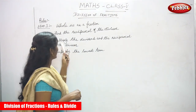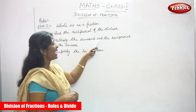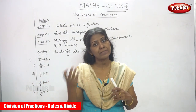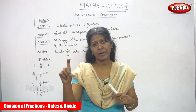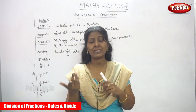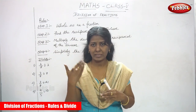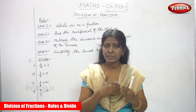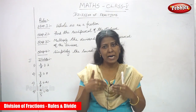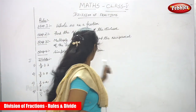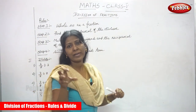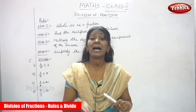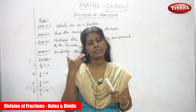Step three: multiply the dividend and the reciprocal of the divisor. First find the divisor, then convert it to the multiplicative inverse — the reciprocal of the divisor — and multiply. Step four: make the final answer as a lowest term as much as possible.